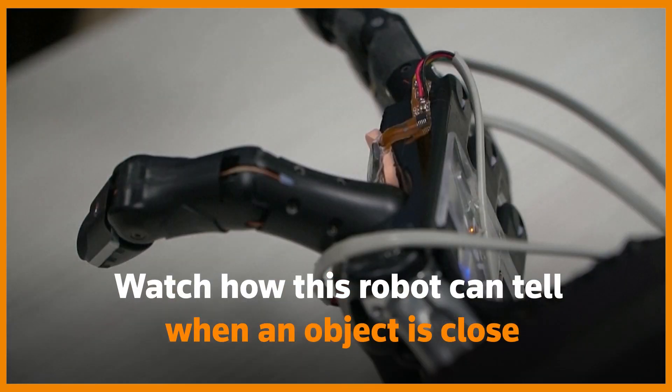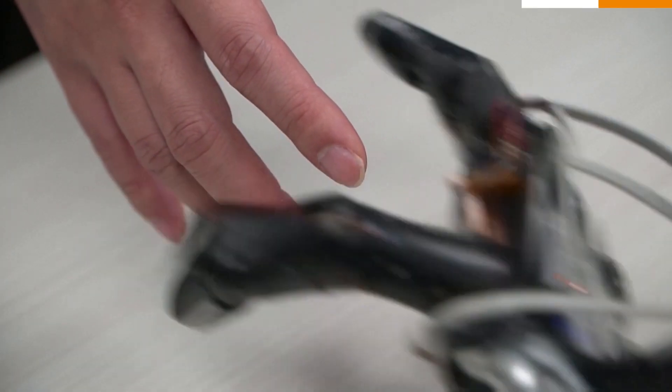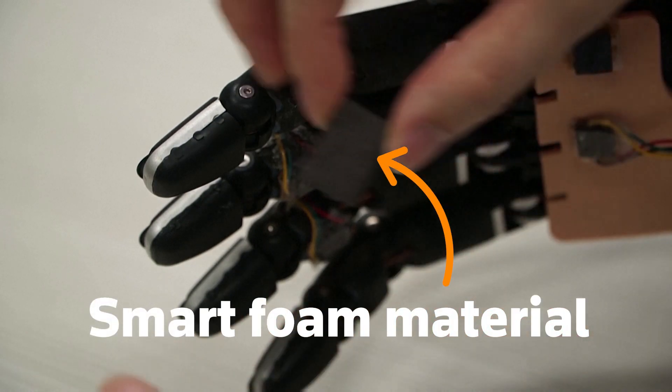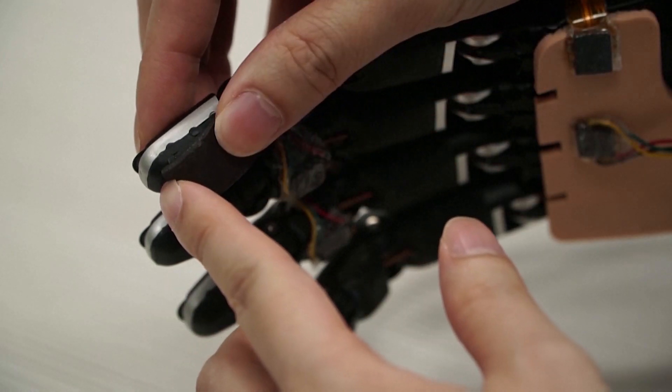Watch how this robot can tell when an object is close. It's all thanks to a smart foam material developed by researchers at the National University of Singapore.